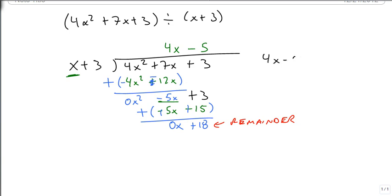We write this as 4x minus 5 plus 18 over x plus 3. And this is our answer from our long division.